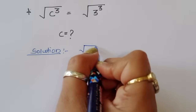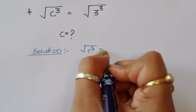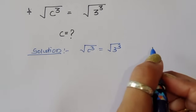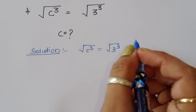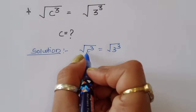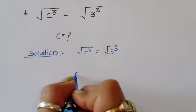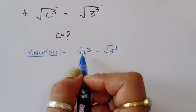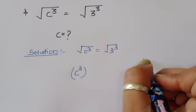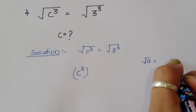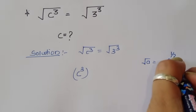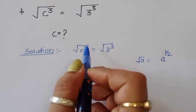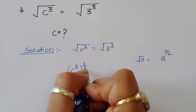Square root of c cubed is equal to square root of 3 cubed. We can write the square root of a as a power 1/2. So we write c cubed with power 1/2.